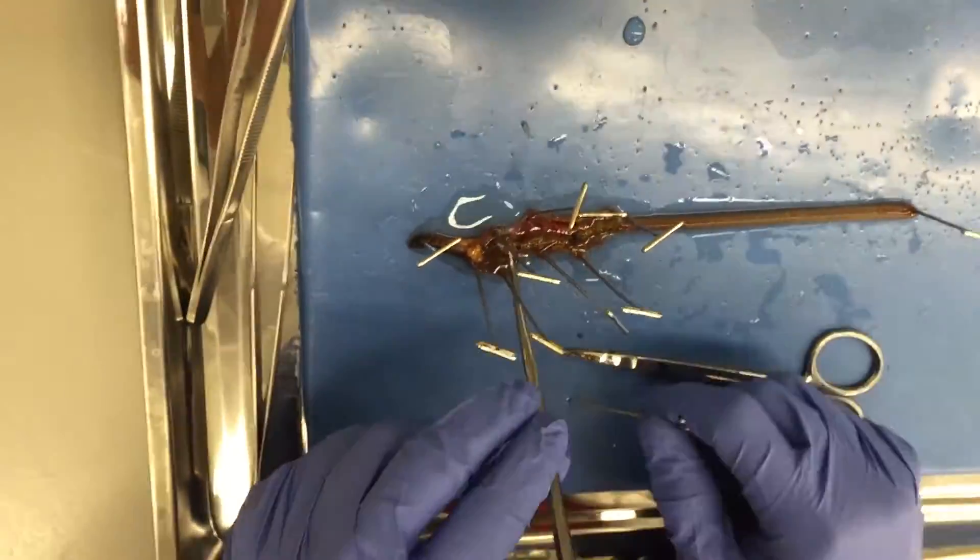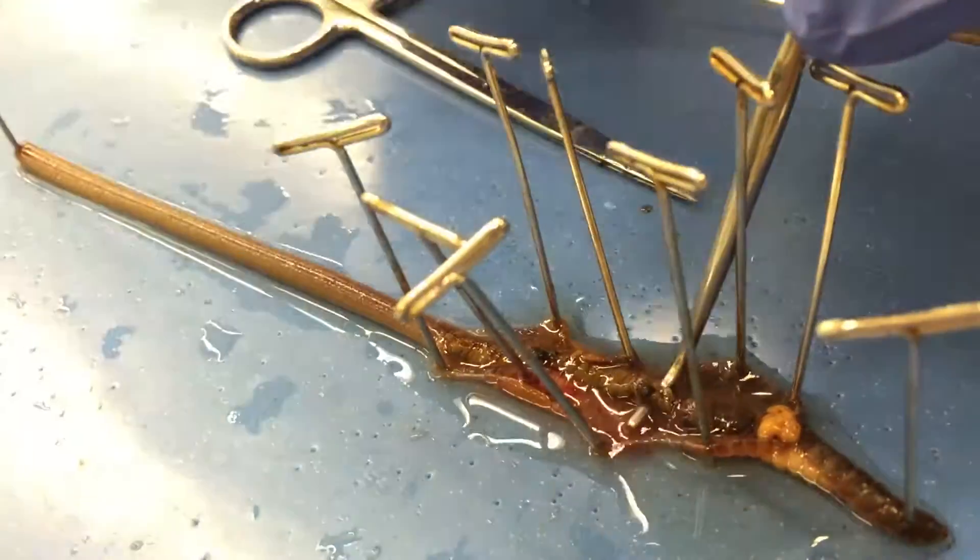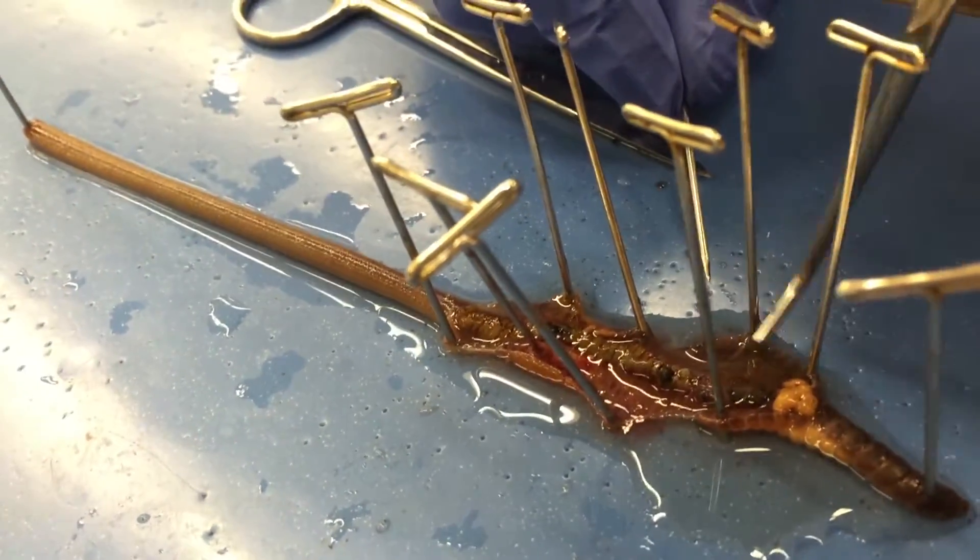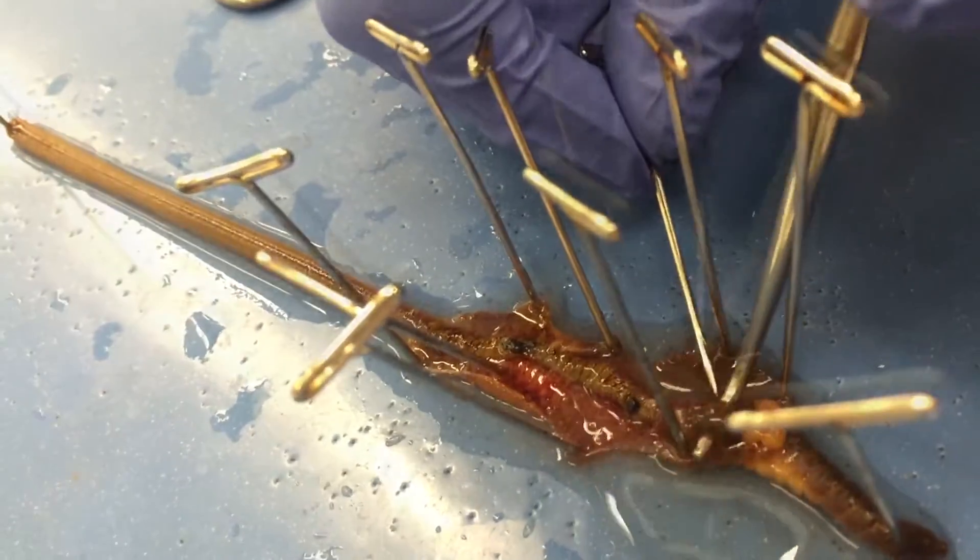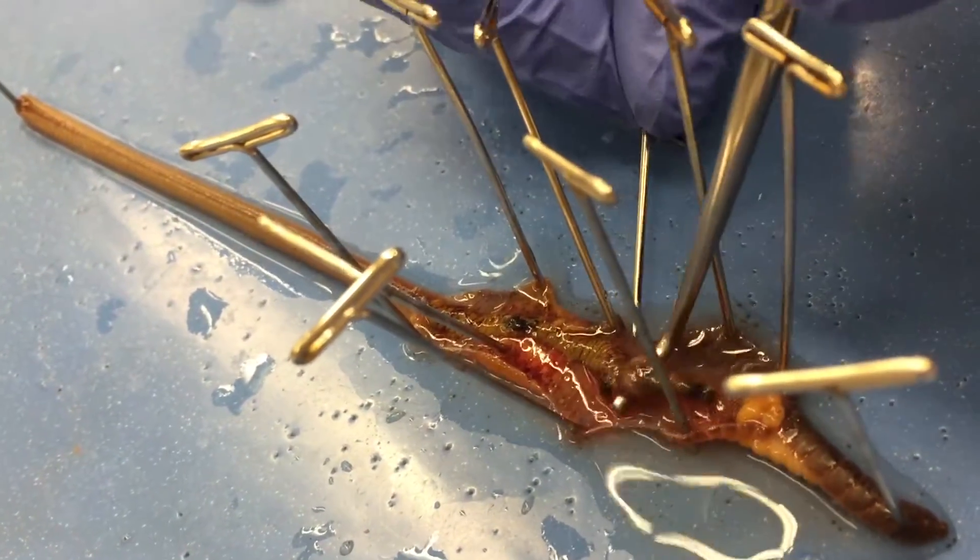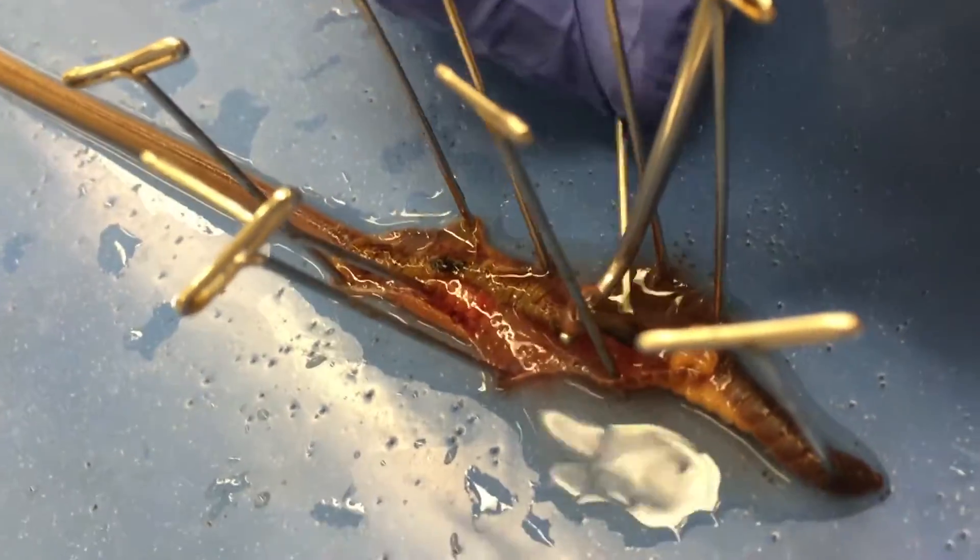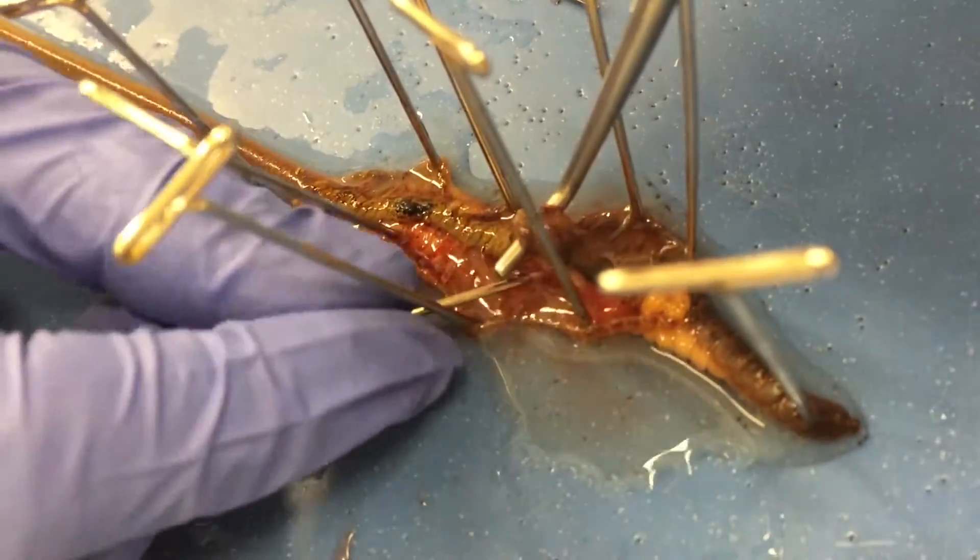Using the probe and a sharp pin, cut away the septa and connective tissues that are holding the crop and gizzard in place. Remember, be careful not to puncture the crop or the gizzard and to only cut away connective tissues on the outside structure.